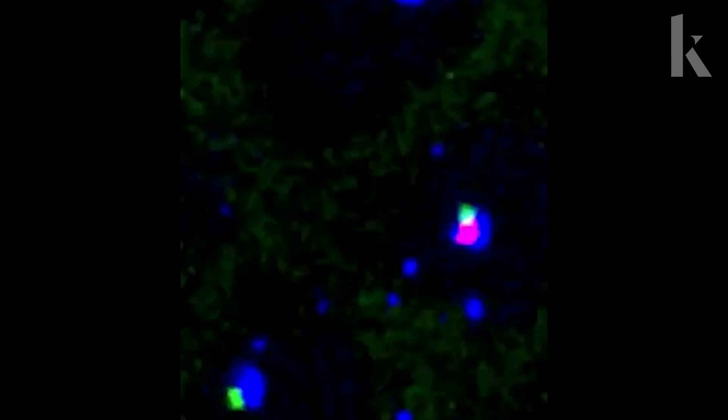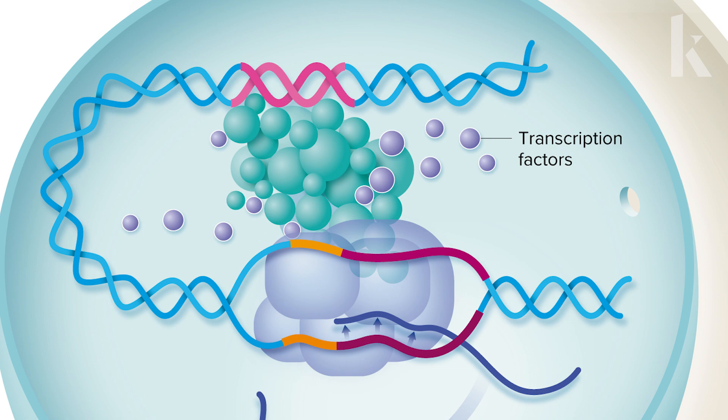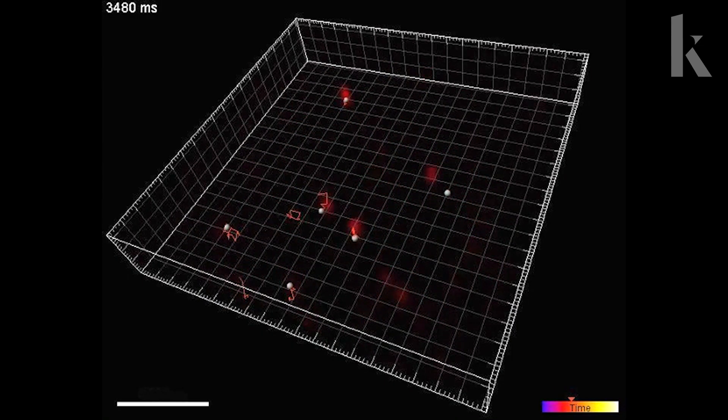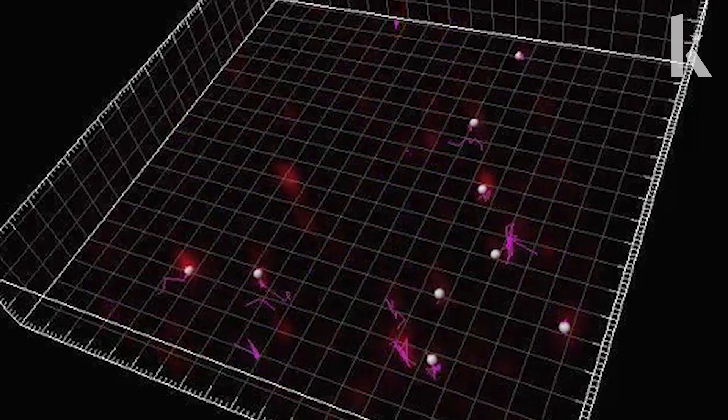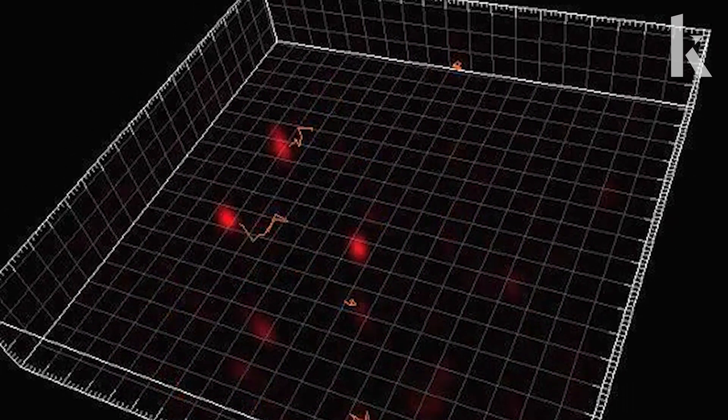But promoters and enhancers don't act alone. Transcription factors must bind to the DNA. The red zigzagging dots you see here are many copies of one kind of transcription factor in a mouse cell. Scientists have found that many transcription factors bind to DNA for only a few seconds.